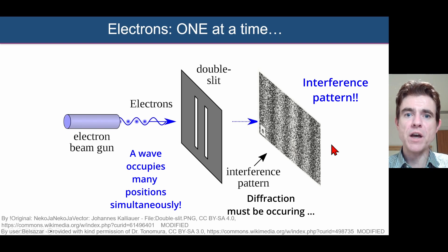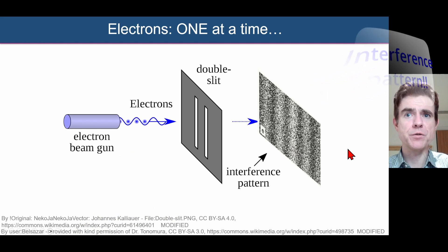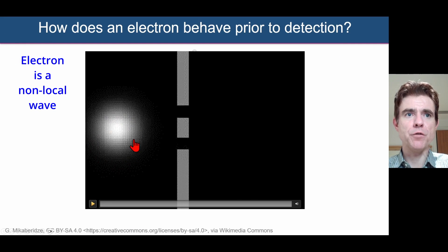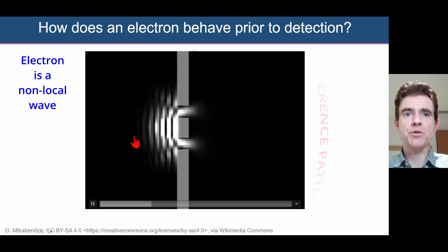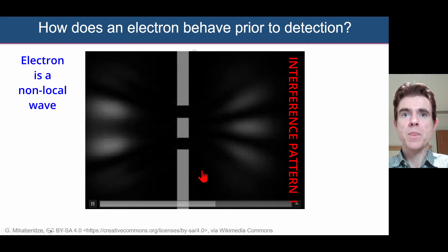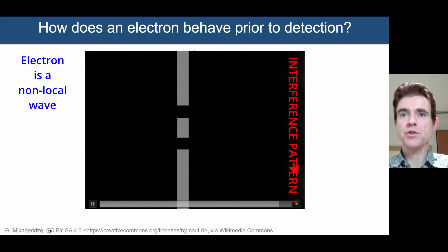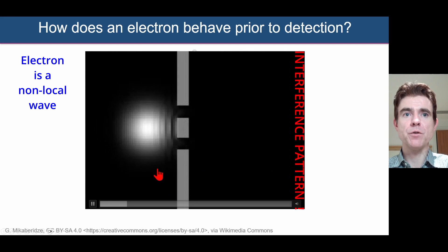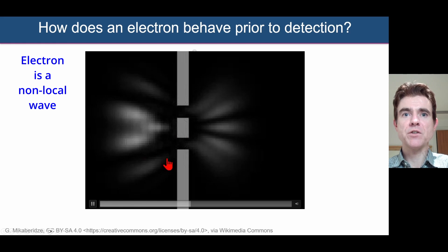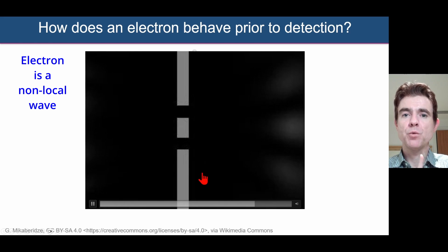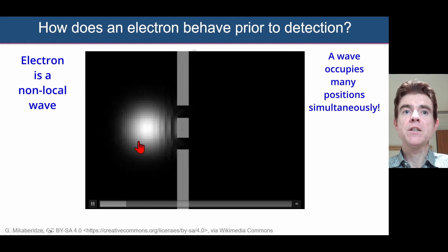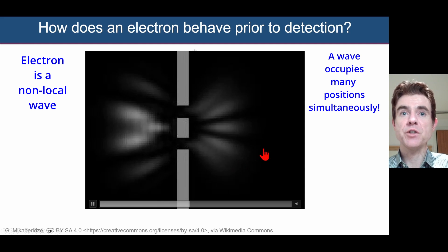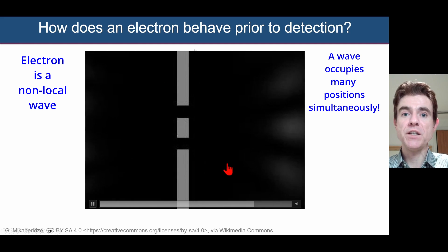Even electrons just one at a time are behaving like waves. This is a simulation of an electron as a wave packet aiming towards a double slit in a screen. This single wave function — which is the electron — diffracts, and we see part of the wave function interfering on the right and part being reflected. This is still one single wave function, one single electron, but in fact it is in many position states simultaneously — the electron could be found in any of those positions.